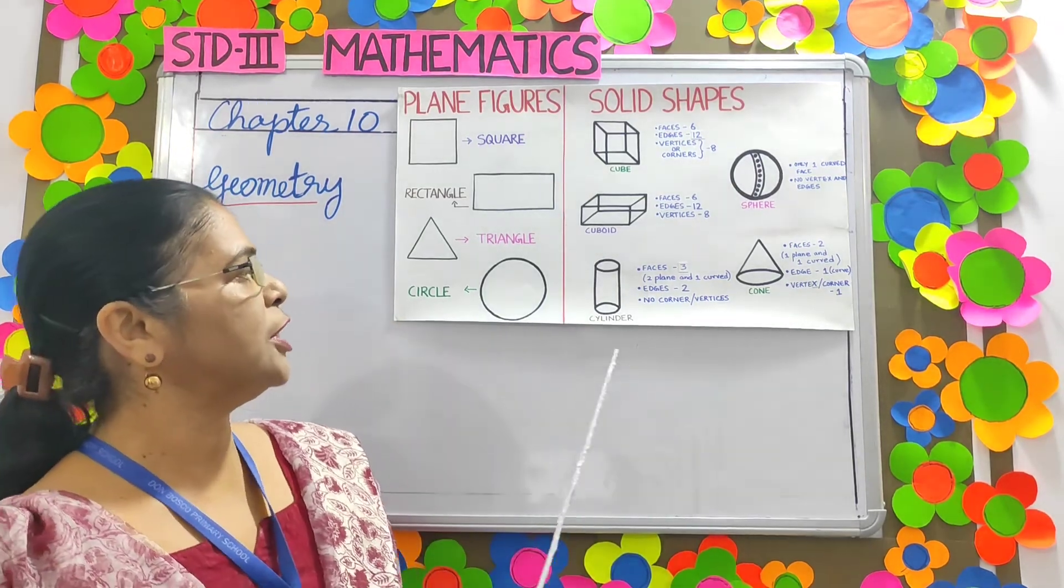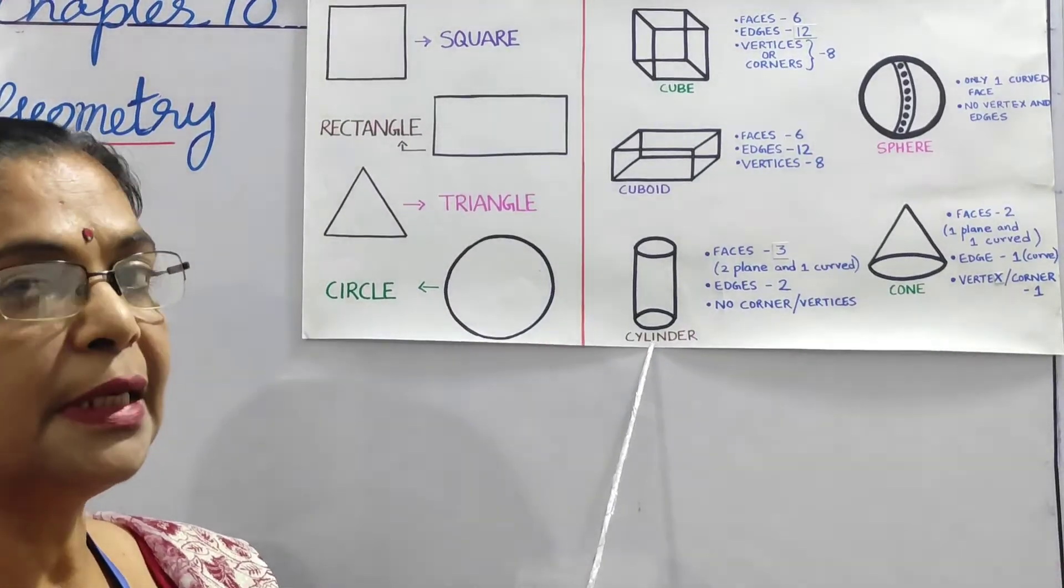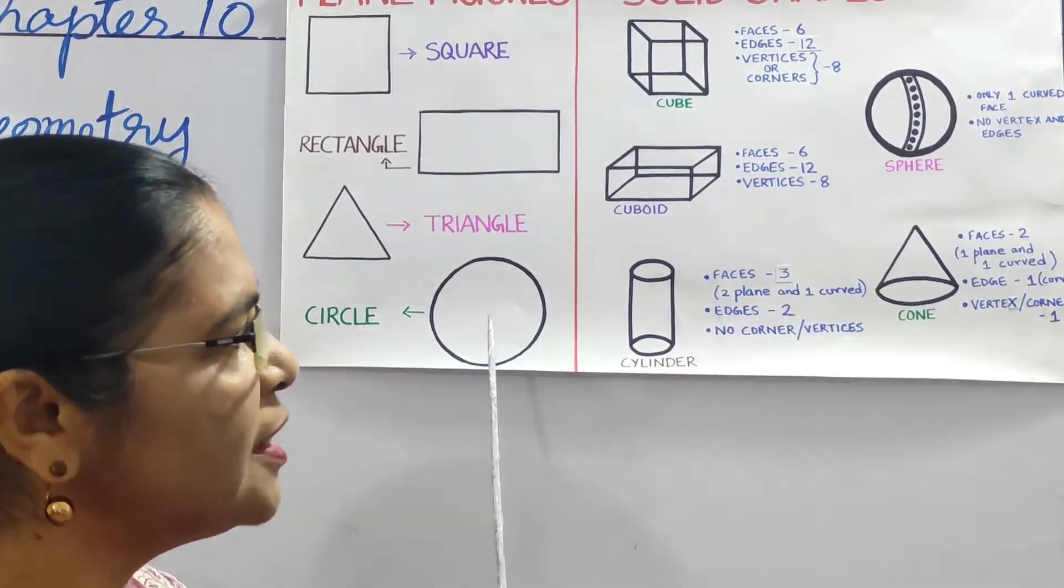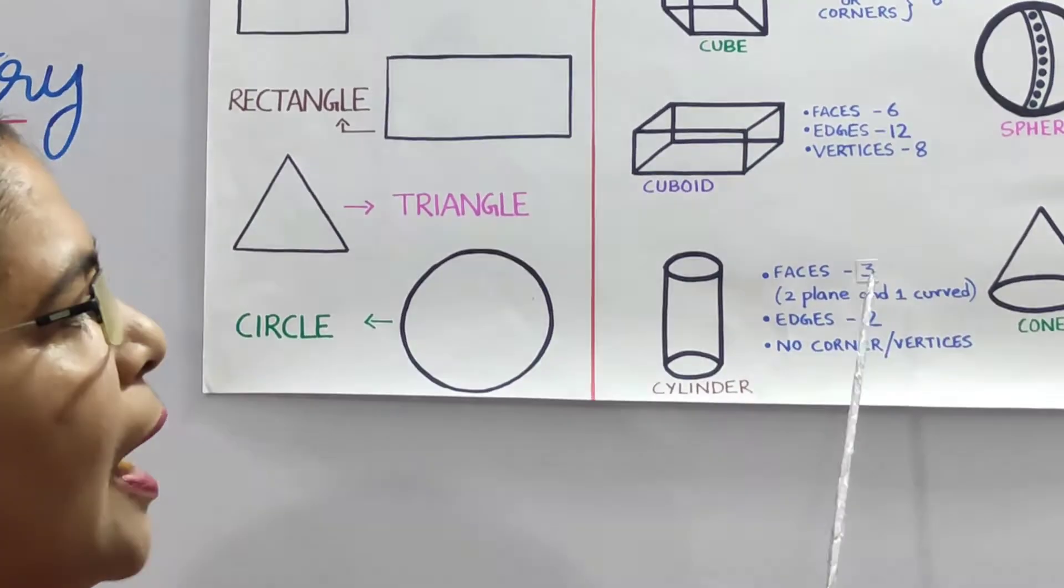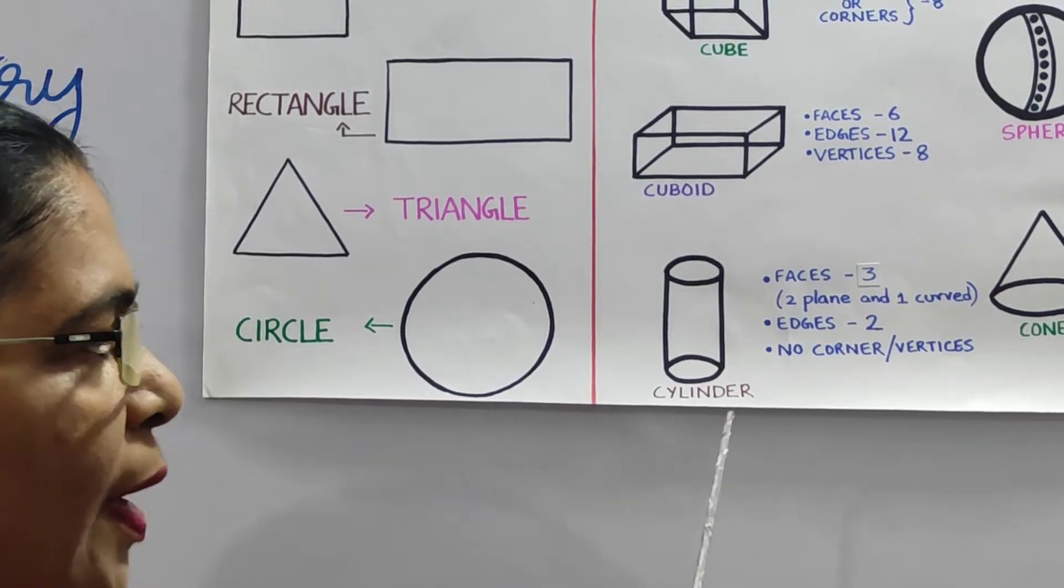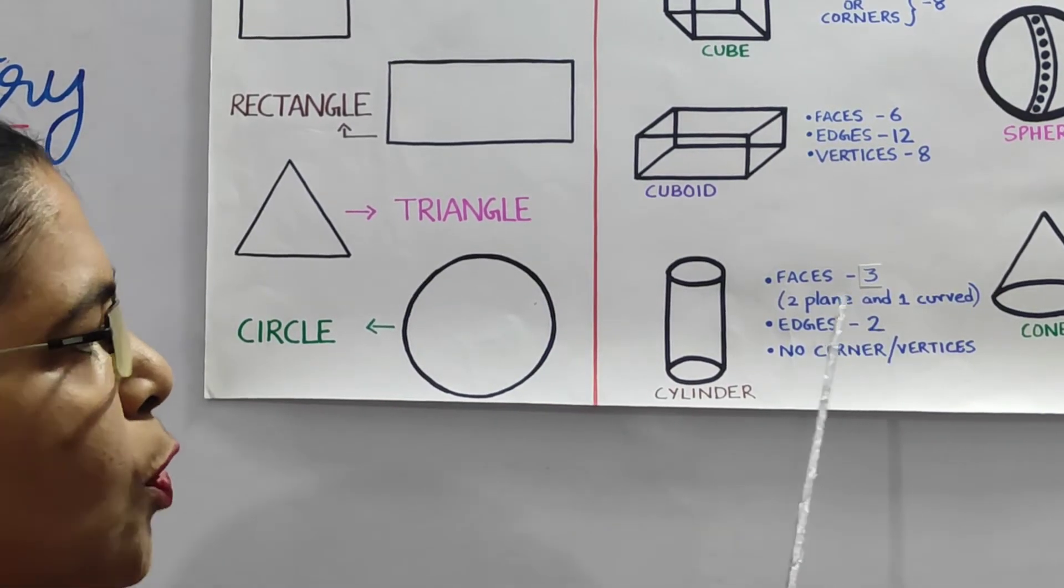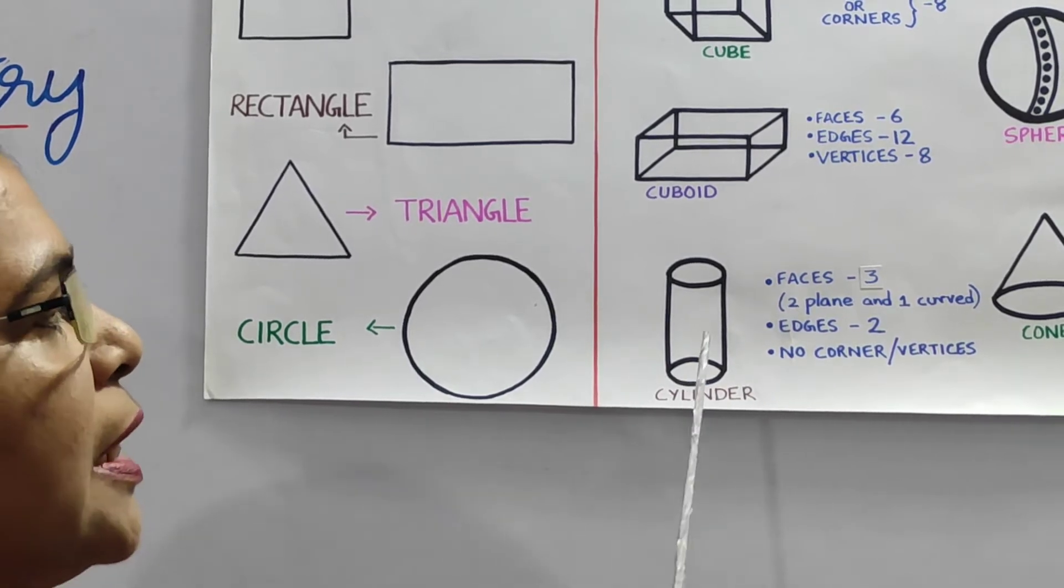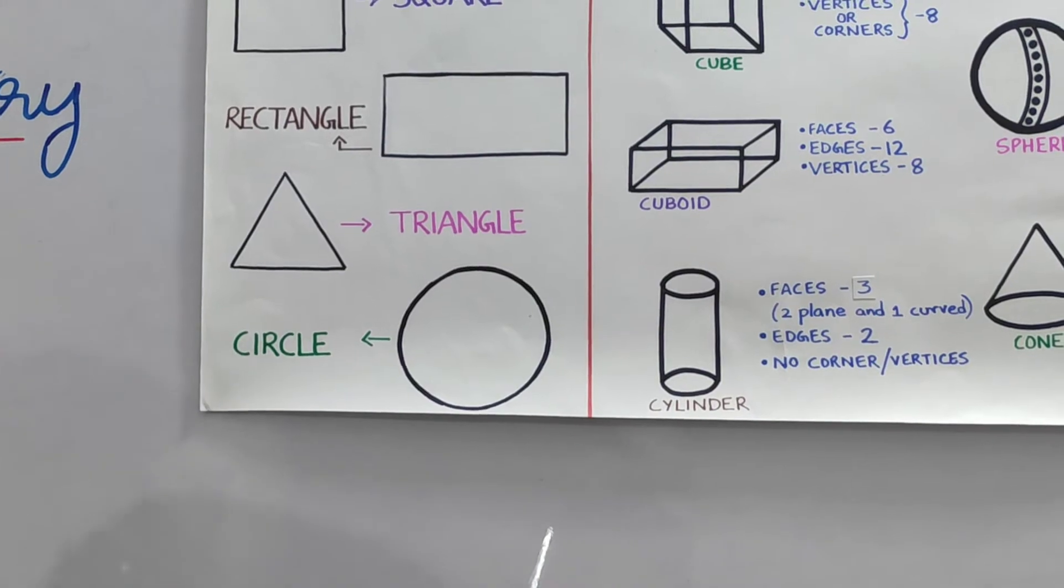Now let's see the next figure. It's a cylinder. A cylinder has three faces, two planes and a curved one. It has two edges and the cylinder has no corner or vertex.